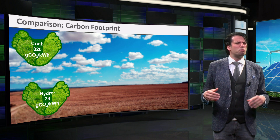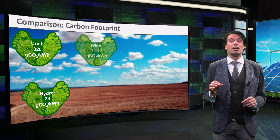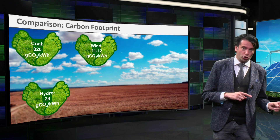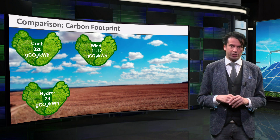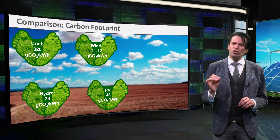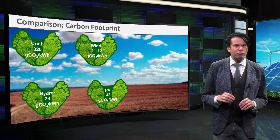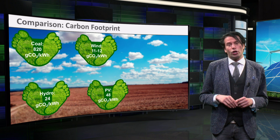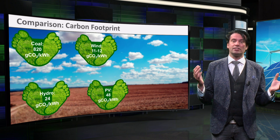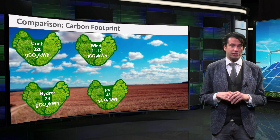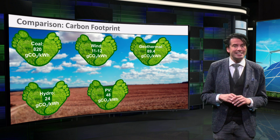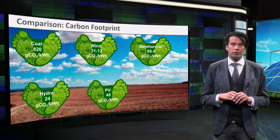Wind power has a much smaller carbon footprint. The average footprint over the entire lifetime of a wind turbine is 11 grams CO2 per kilowatt hour for onshore wind and 12 grams for offshore projects. Notably, PV technology has a larger carbon footprint, caused by the fairly energy-intensive processing of the silicon semiconductor material. According to the IPCC research from 2014, on average the carbon footprint of large-scale PV installations is about 48 grams CO2 per kilowatt hour. Geothermal energy has a footprint of 89.4 grams CO2 per kilowatt hour.